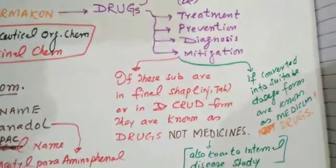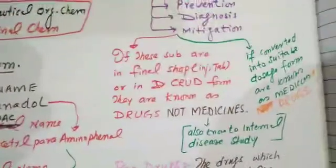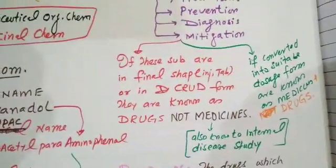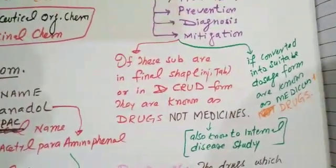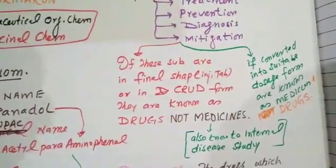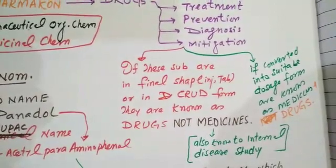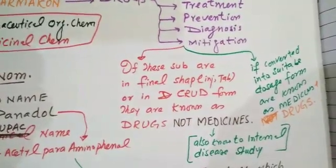For example, we use antihypertensives to decrease blood pressure, and we use anti-diabetics to decrease sugar level.